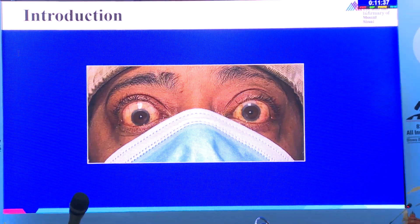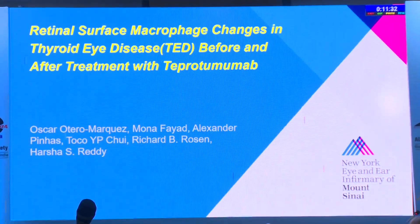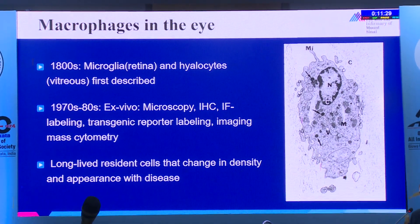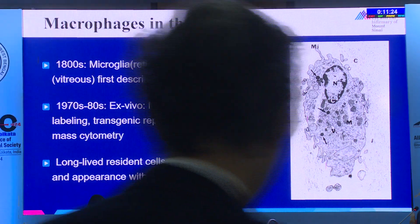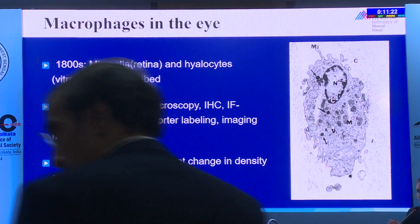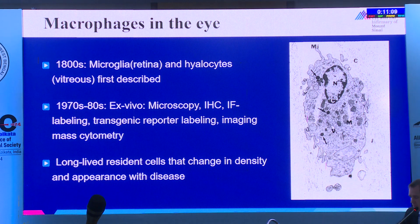We traditionally think of thyroid eye disease from the outside in; this presentation is about thinking about it from the inside out. As background: macrophages—both microglia and hyalocytes—have been known to exist inside the eye since the 1800s. In the 1970s and 80s we started understanding these cells more clearly, recognizing they reside in tissue for long periods and respond and change with disease.